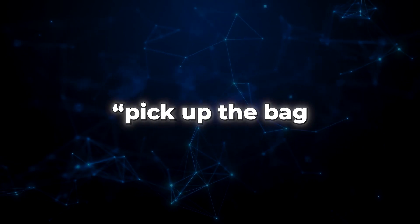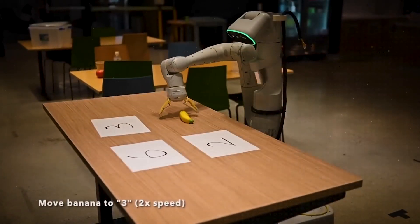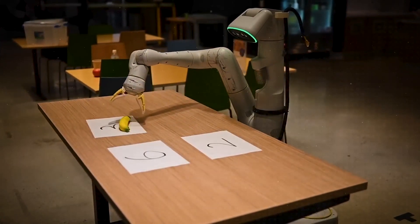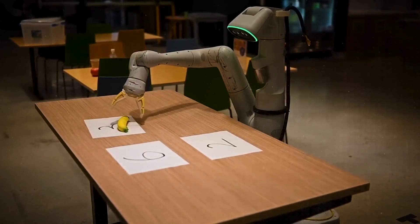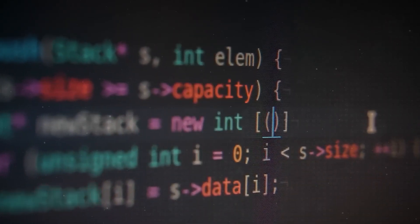RT2 was given commands like pick up the bag about to fall off the table, or move banana to sum of 2 plus 1. Now, get this, these commands involved objects and scenarios the robot had never seen in its robotic data. But guess what? RT2 was up to the challenge.